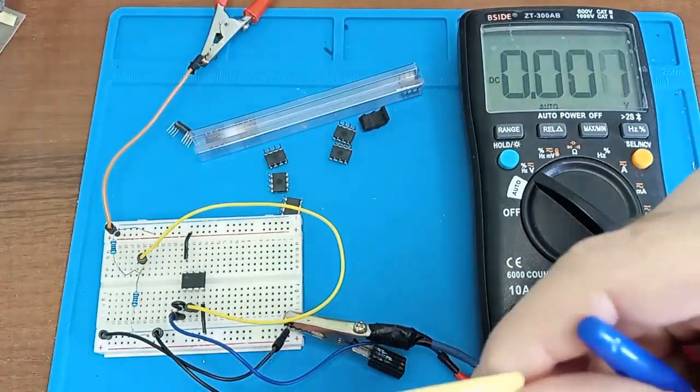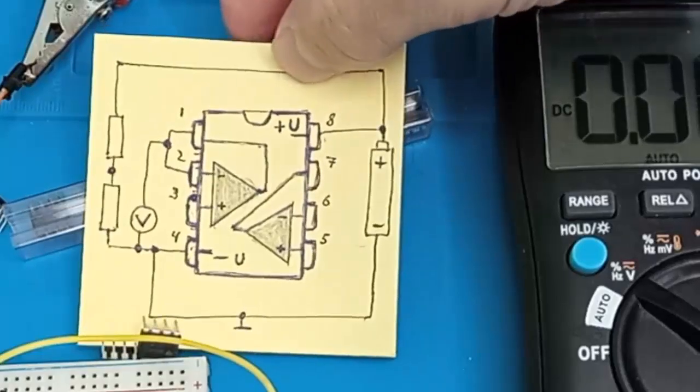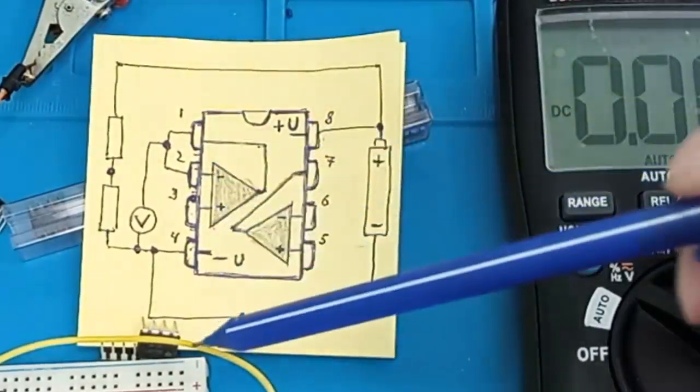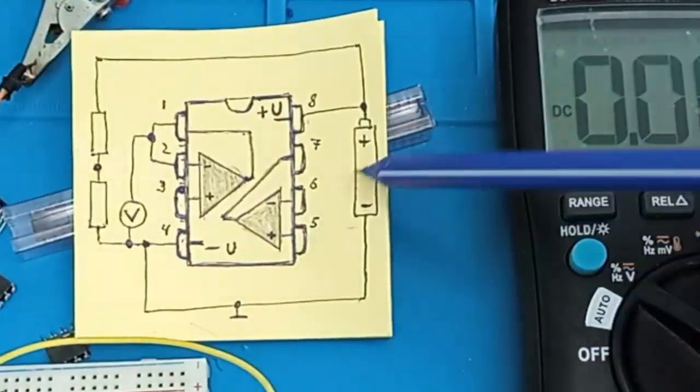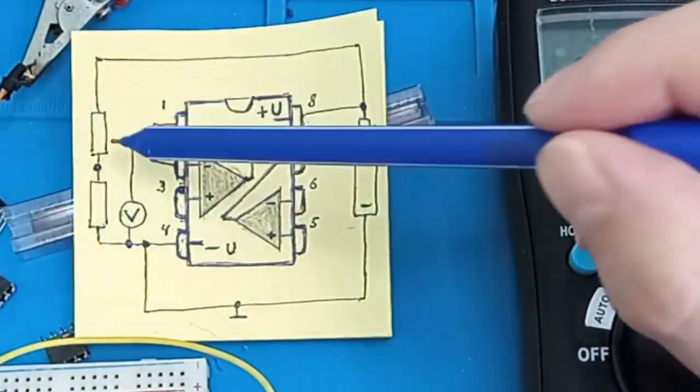Now let's look at the diagram. To make it clearer, this is what the diagram itself looks like. Now I will explain how it all works. Here's the power source. Here are two identical resistors.